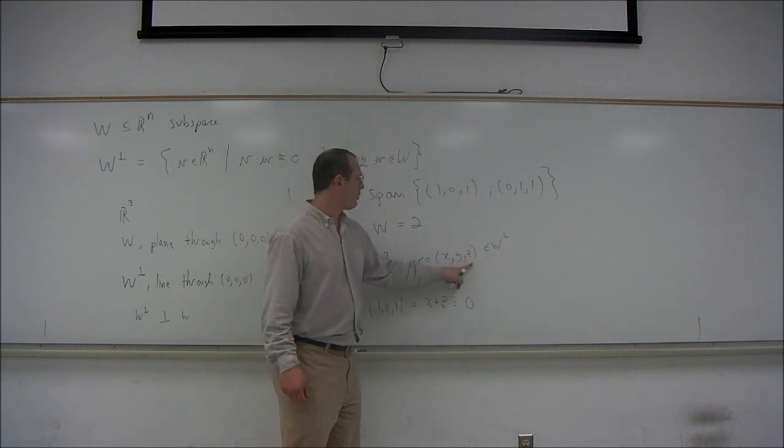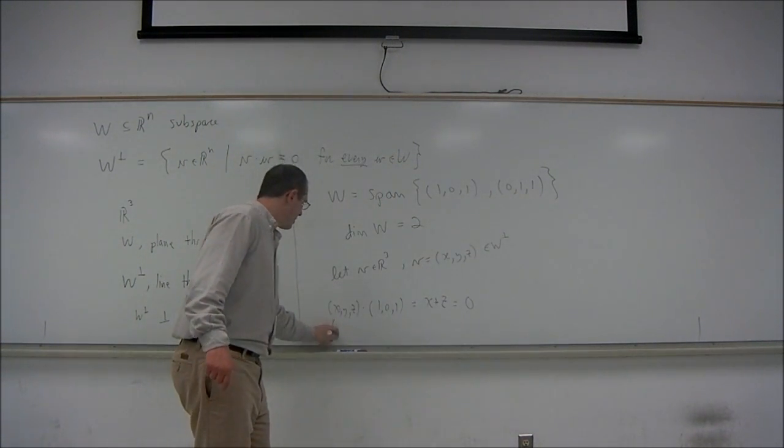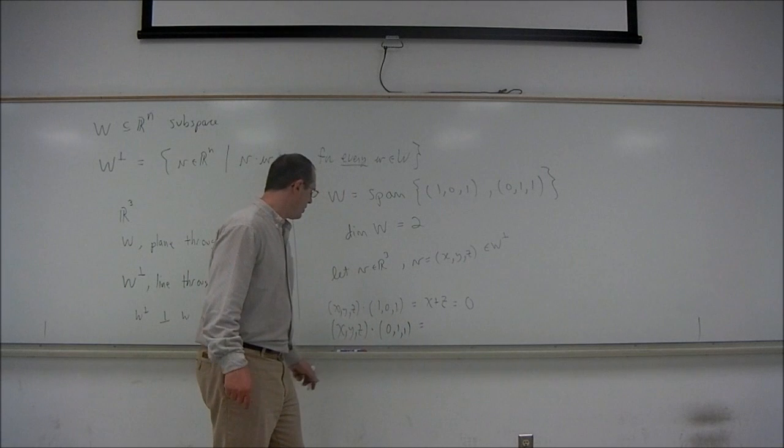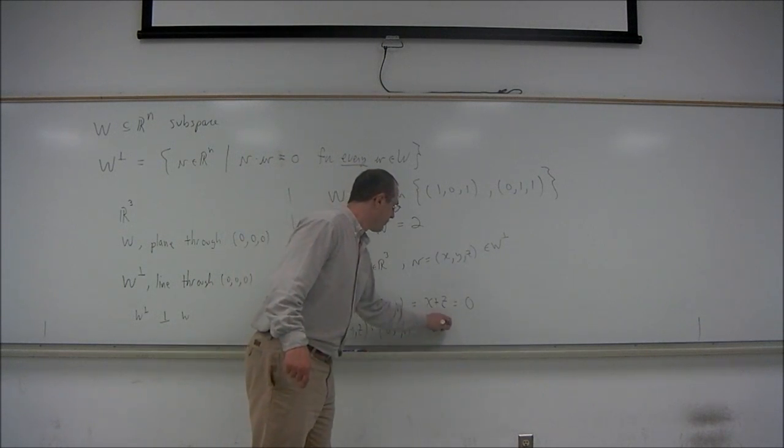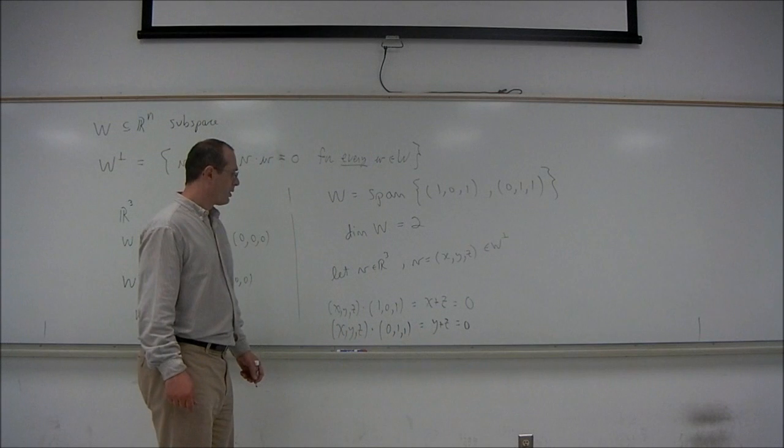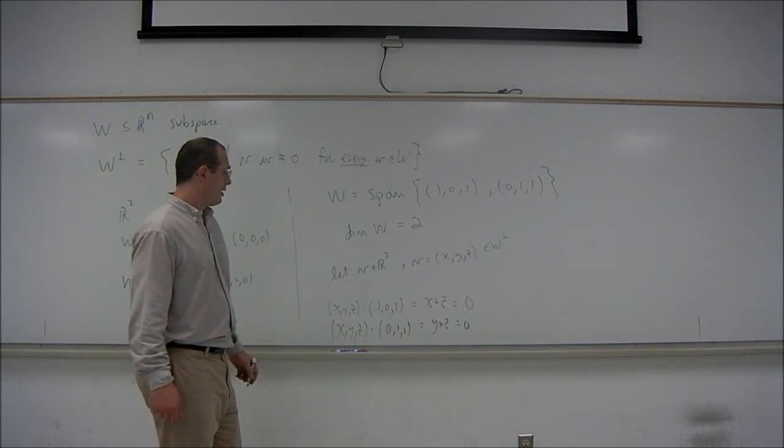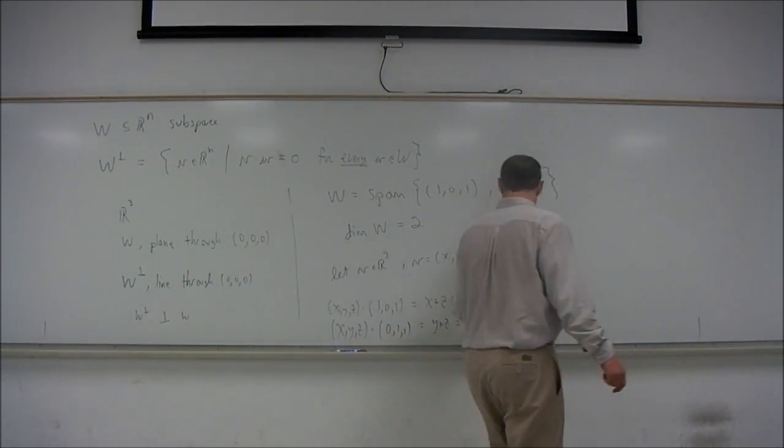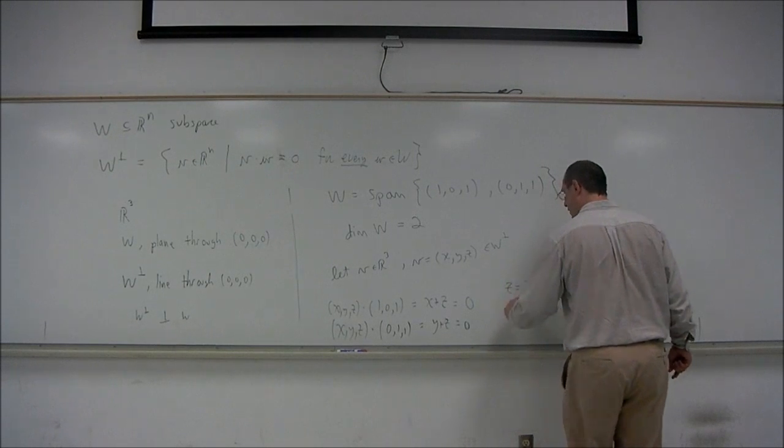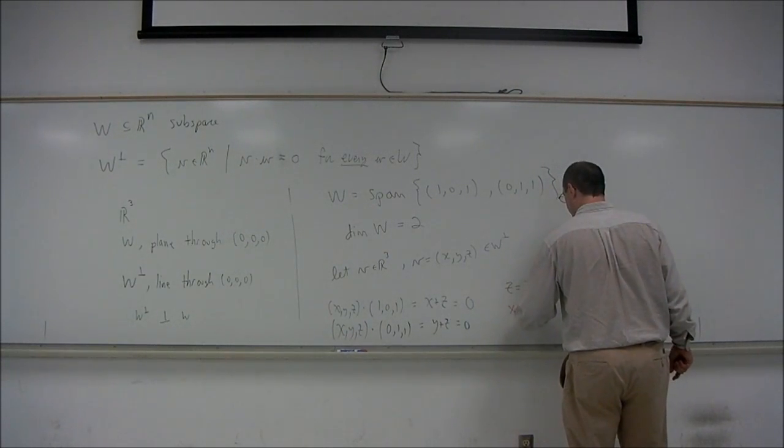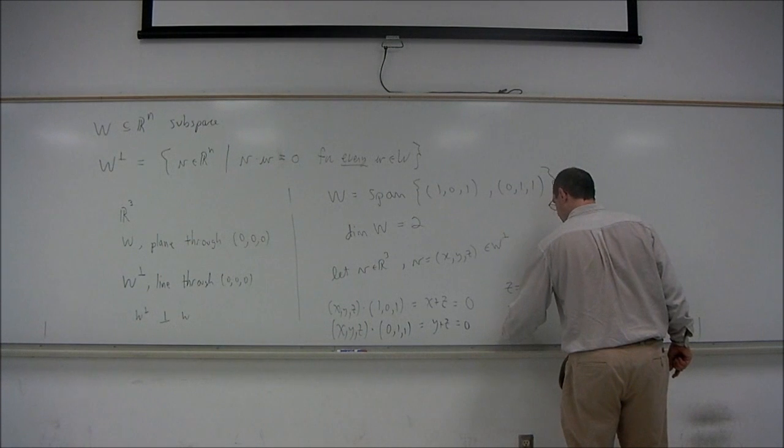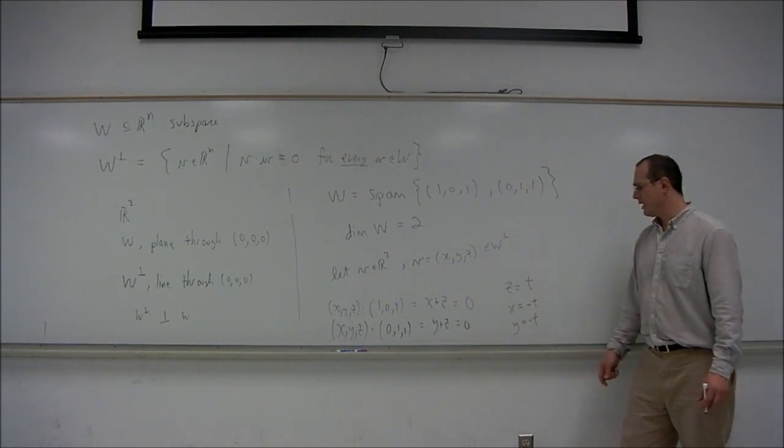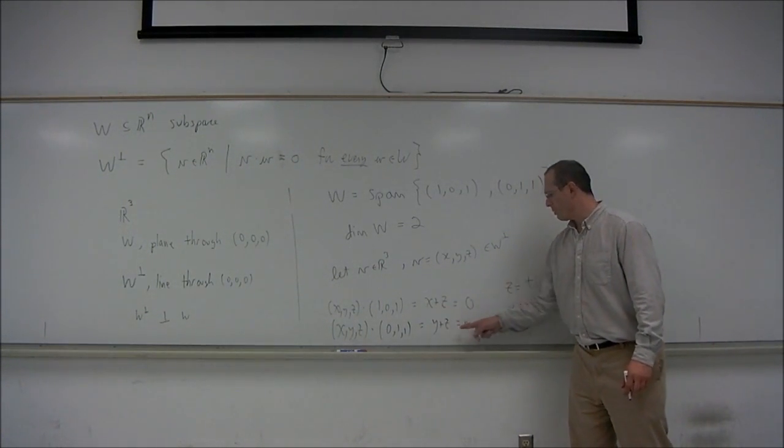The other dot product to consider is (X, Y, Z) dotted with the other basis vector (0, 1, 1). That would be Y plus Z, and that should be 0. In the solutions to this 2 by 3 system, we can have Z equal to a parameter T, and then X and Y would be negative T. Z is any number whatsoever, and X and Y would be the negative of that number in order for X plus Z and Y plus Z to be 0.